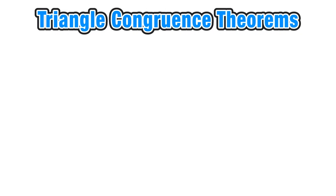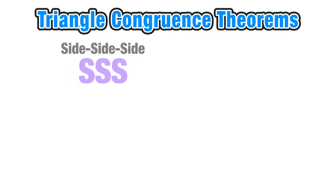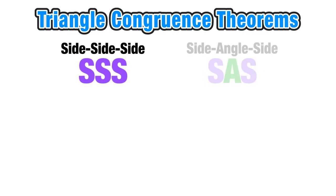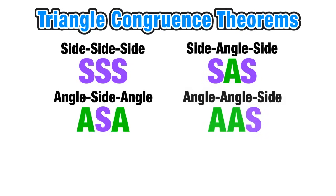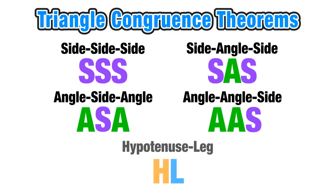Here are the five triangle theorems with their abbreviations: side-side-side, side-angle-side, angle-side-angle, angle-angle-side, and hypotenuse-leg. Now we're ready to go ahead and explore each theorem individually.